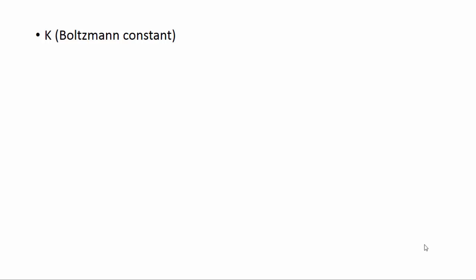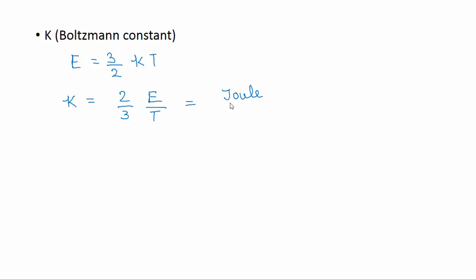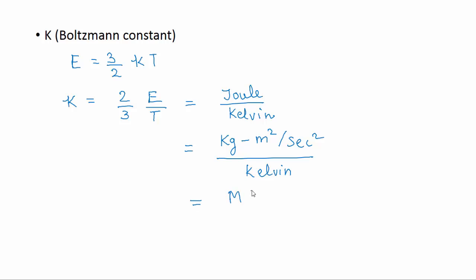For Boltzmann constant k, we use E = (3/2)·k·T, where T is temperature. Rearranging: k = (2/3)·E / T. The factor 2/3 is dimensionless, so we only need units of energy and temperature. Energy in base units is kg·m²/s² and temperature is kelvin. Dimensions: kg → M, m² → L², s⁻² → T⁻², kelvin → K. So the dimension of Boltzmann constant is M·L²·T⁻²·K⁻¹.